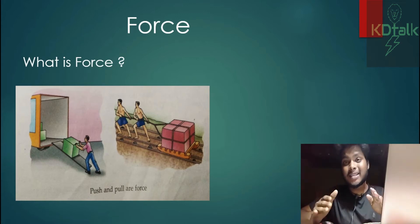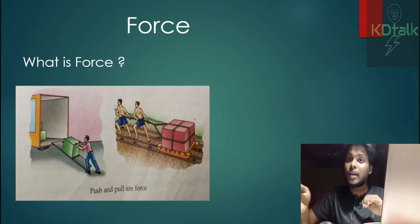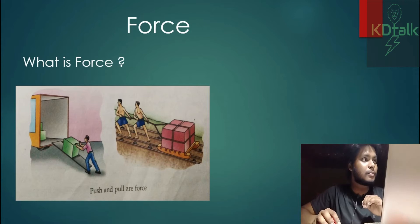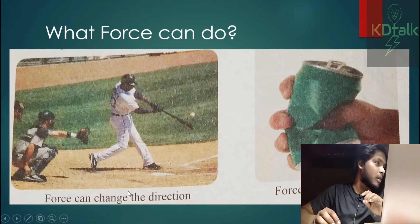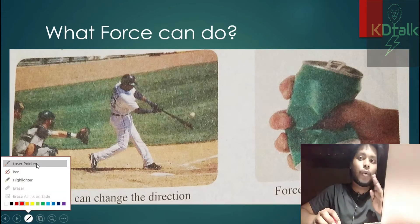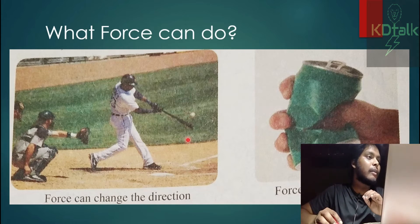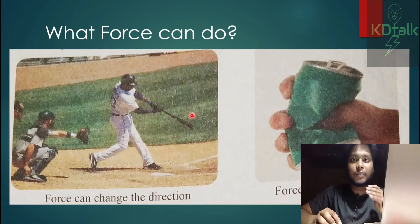Force can make a stationary object movable, or can stop an object which is already in motion. Force can change the direction and speed of an object. In the figure, a person is hitting a ball, and if the person hits the ball, the direction and speed of the ball will change.